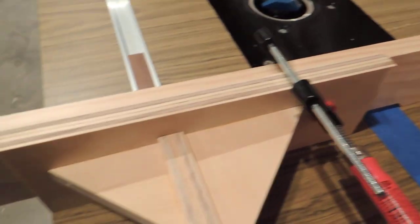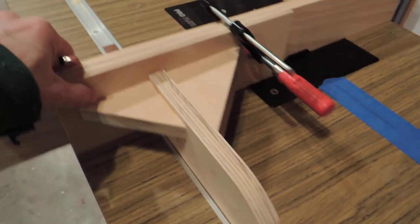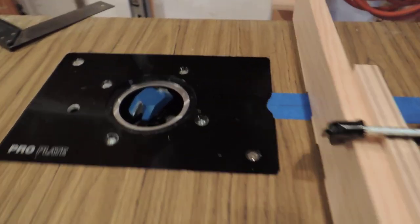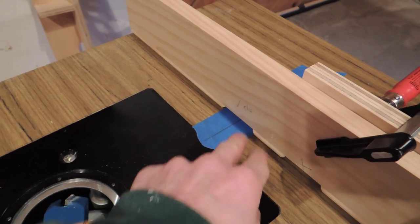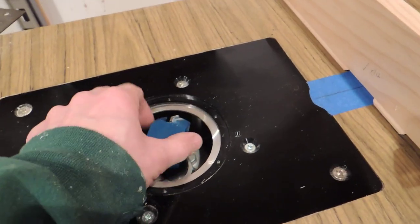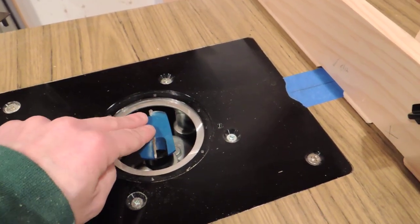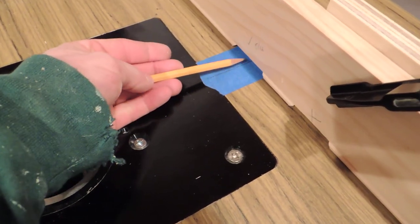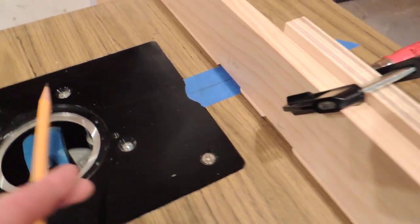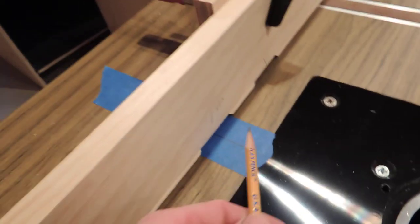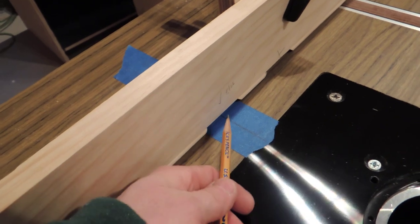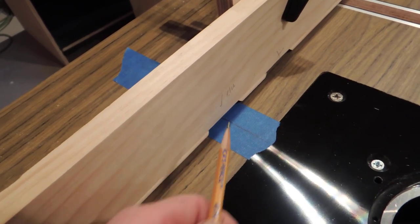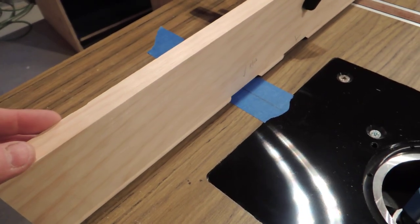All right, this is the basic setup on the router table. I have a miter gauge in a slot, which is going to move back and forth. And what I'm going to want to cut is this edge right here. Again, this is just a piece of scrap right now. And we have the bit height correct, as far as I can figure. So I've already used trial and error to get that height correct.